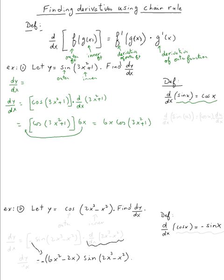So this is six x cosine of three x squared plus one. That's it for this example. We can rewrite this as a general rule: the derivative of sine of a function u with respect to x is always cosine of u times the derivative of u with respect to x — and that's exactly what we did.